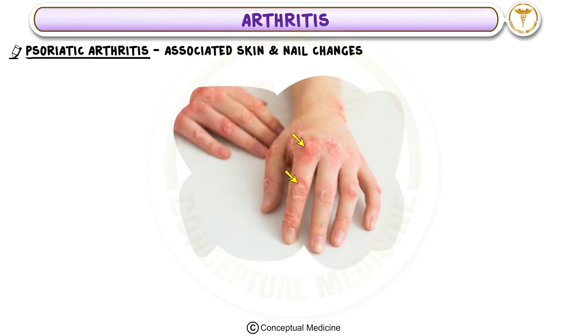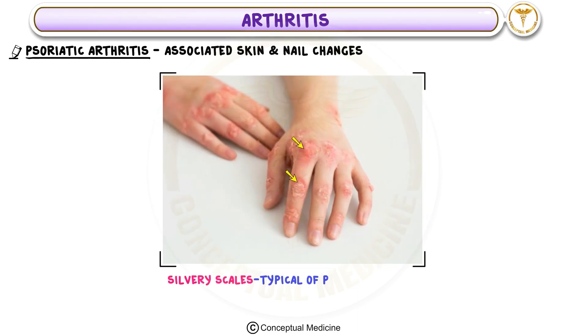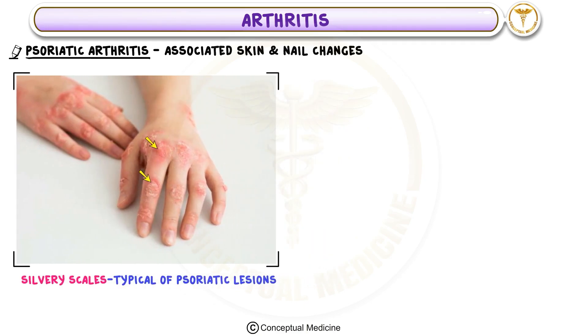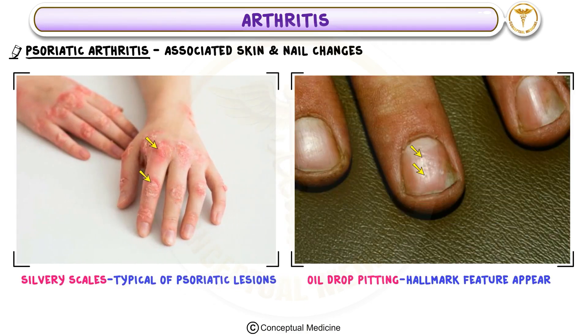Associated Skin and Nail Changes: On the skin, look for silvery scales, which are typical of psoriatic lesions. On the nails, you might notice oil drop pitting — a hallmark feature that appears as tiny depressions on the nail surface.